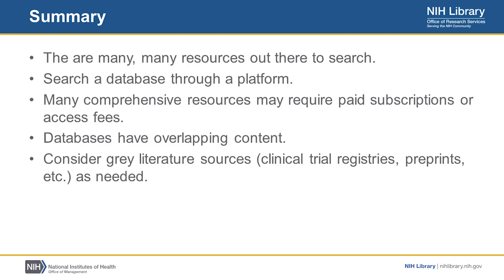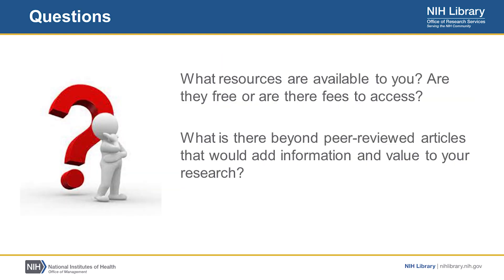So in summary, there are many, many resources out there you can search, and you search a database through a platform. A lot of the comprehensive resources may require paid subscription or fees to access, and many databases may have overlapping content. Even so, it's important to have a comprehensive literature search that includes more than one database. You may also want to consider gray literature sources such as clinical trial registries, preprints, and other things as part of your background. Some questions to consider: What resources are available to you? Are they free, or are there fees to access them? What is there beyond peer-reviewed articles that would add information and value to your research? Thank you for listening.